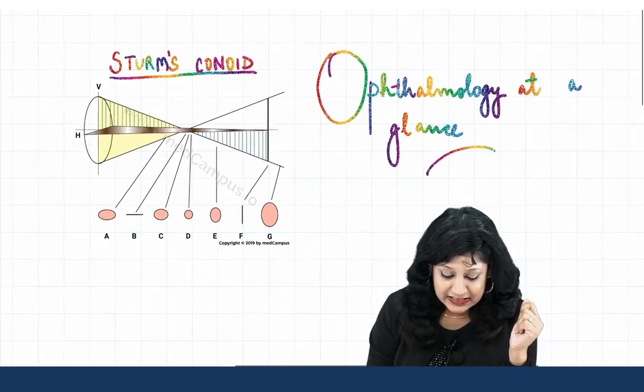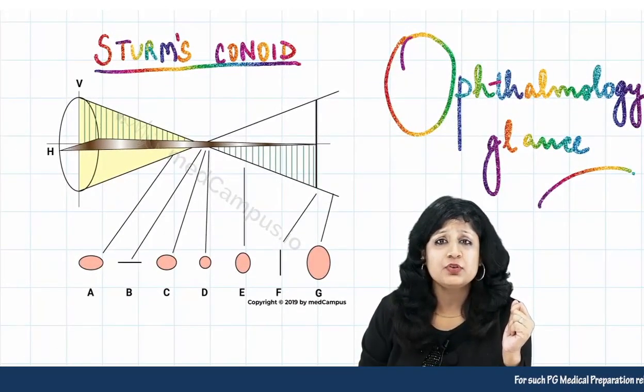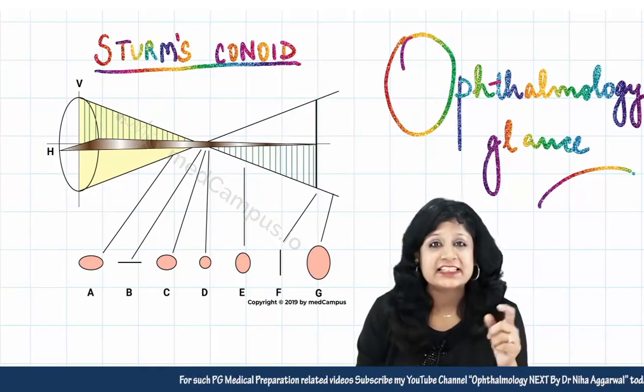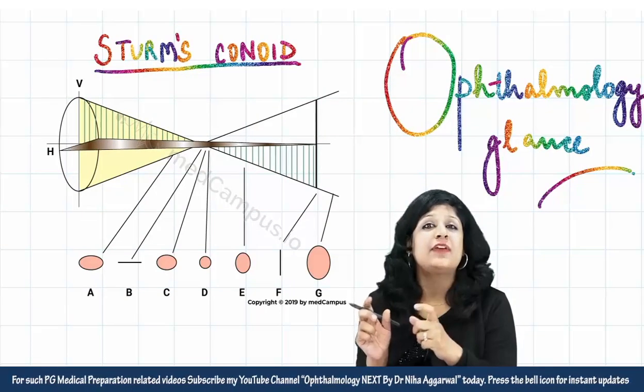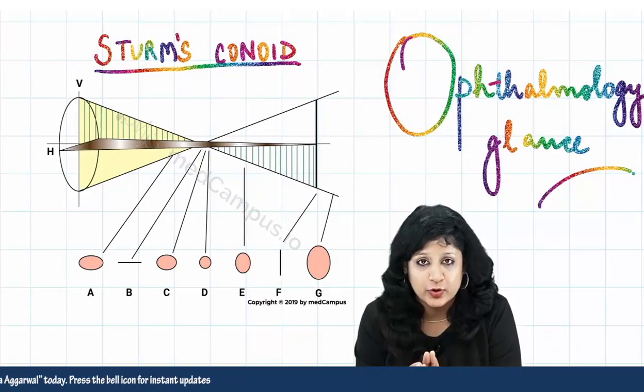So today we are going to discuss Sturm's conoid, a very volatile topic but a very important topic. Let's see the different kinds of astigmatism that you get at different points in the Sturm's conoid.